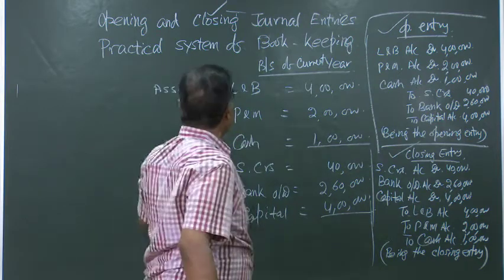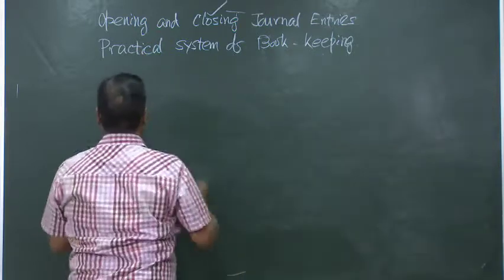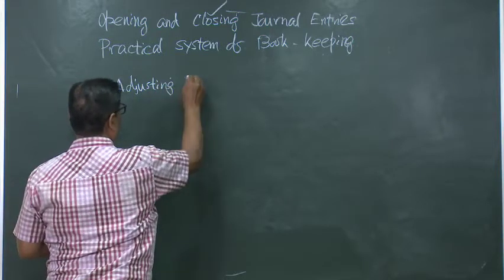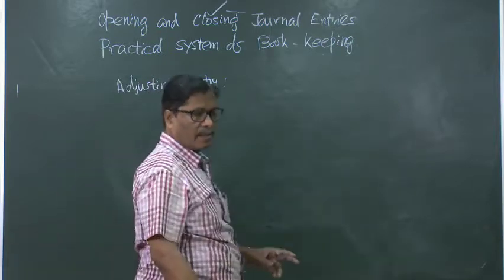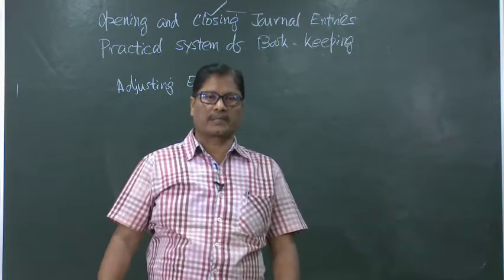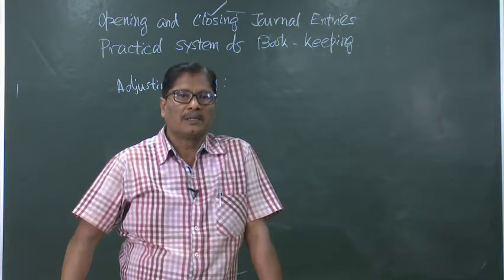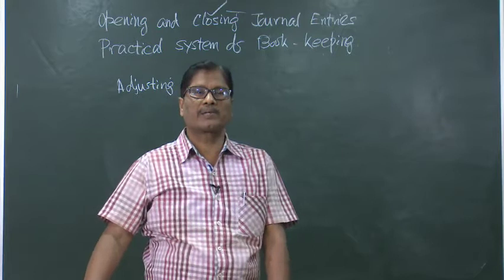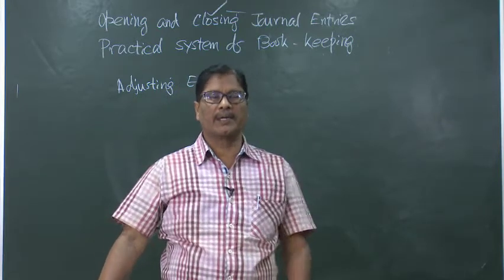In the opening entry all assets will be debited and liabilities and capital will be credited, but in the closing entry just the opposite — all liabilities will be debited and asset accounts will be credited; capital account will also be debited. This is regarding opening and closing entries. Now coming to adjusting entry: when we have to adjust after the trial balance has been made — suppose some expenses came into our mind that were not recorded so far — we will take the help of an adjusting entry.